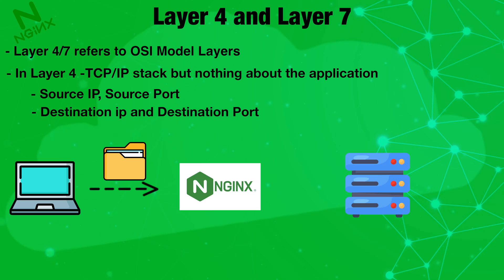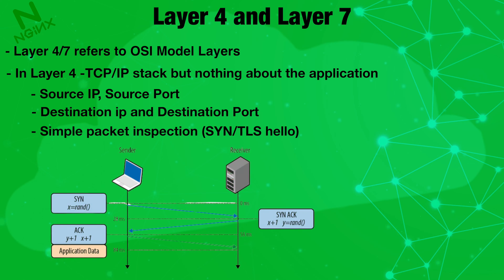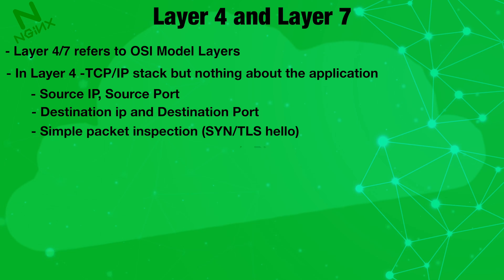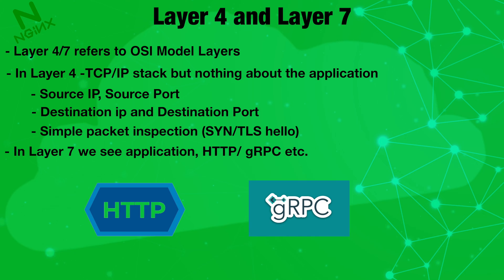Using this information, nginx can do certain things at layer 4: it can allow or block a packet based on a specific destination, it can do redirects (e.g., redirect traffic from one port to another), and it can perform simple packet inspection — such as inspecting the SYN packet for TCP/IP handshake or the TLS hello packet for TLS handshake.